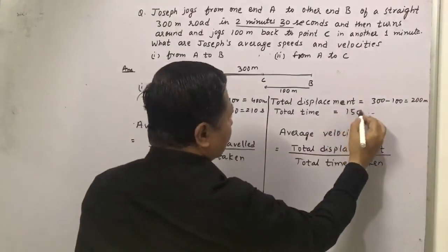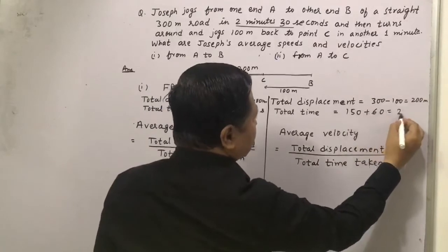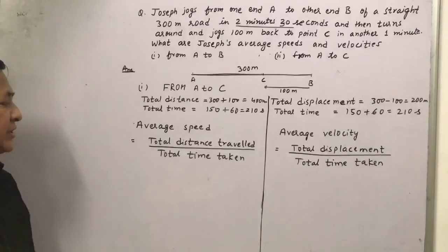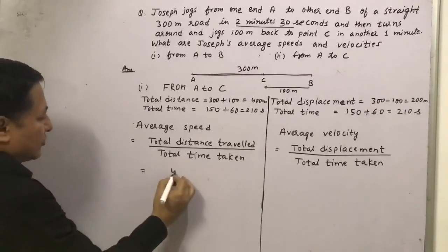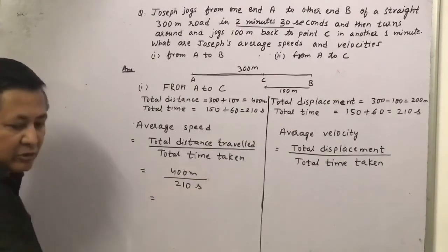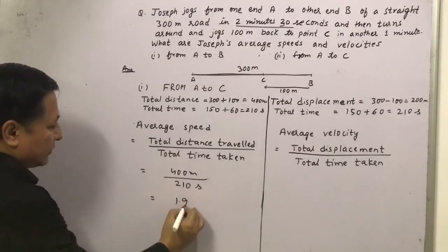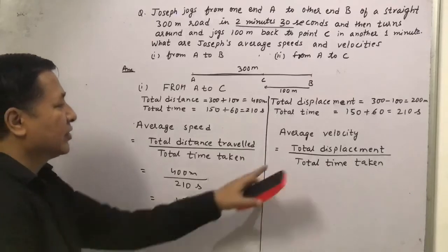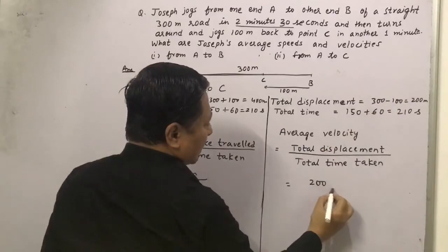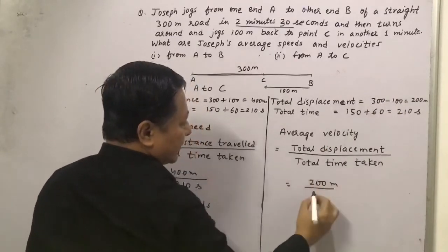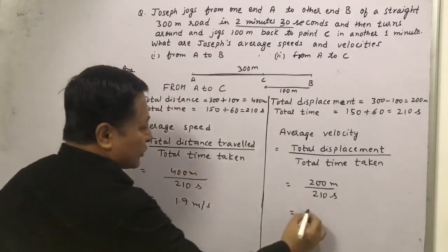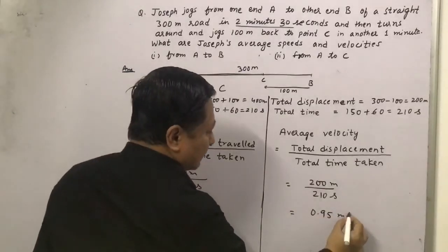The total time is 150 plus 60, that is 210 seconds. Using the formula for average speed — total distance divided by total time taken — total distance is 400m and total time is 210 seconds, which gives 1.9 m/s. For average velocity, total displacement divided by total time taken: 200m divided by 210 seconds gives 0.95 m/s.